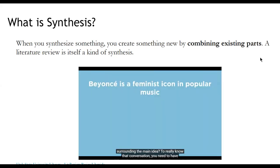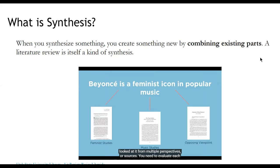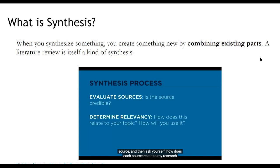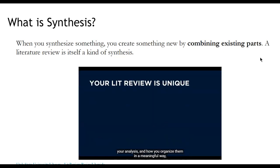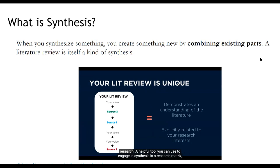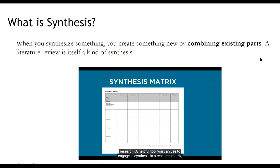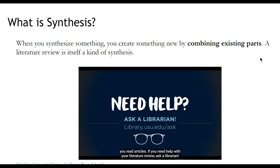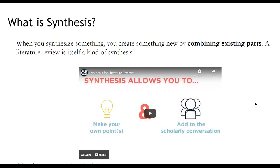What is the conversation surrounding the main idea? To really know that conversation, you need to have looked at it from multiple perspectives or sources. You need to evaluate each source and ask yourself: how does each source relate to my research question? Jot down those thoughts as you go. The sources you choose to include, your analysis, and how you organize them in a meaningful way make your literature review unique — you're developing your own understanding of the literature and explicitly stating what it means to your research. A helpful tool is a research matrix, which helps you organize by idea and add your own thoughts as you read.